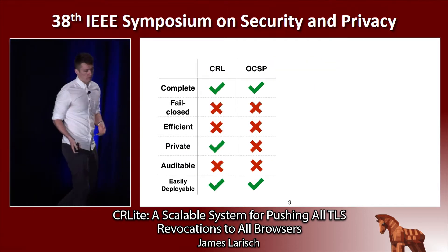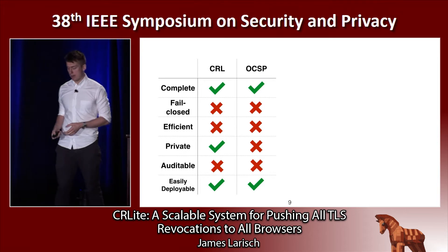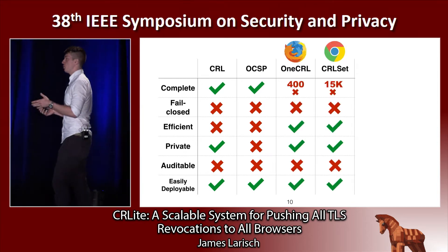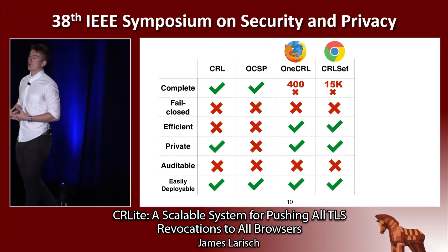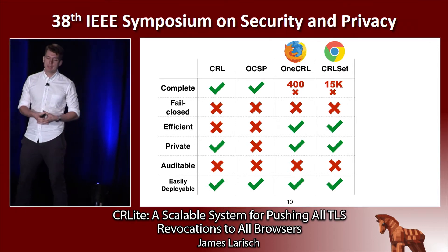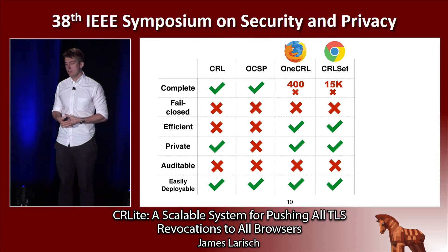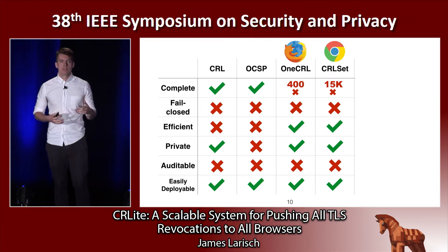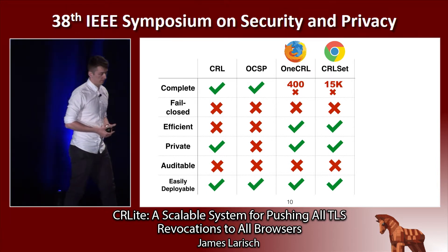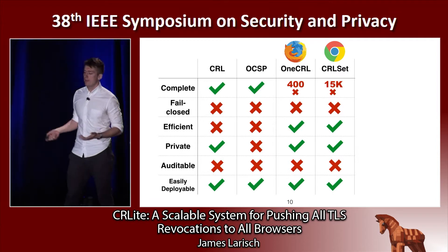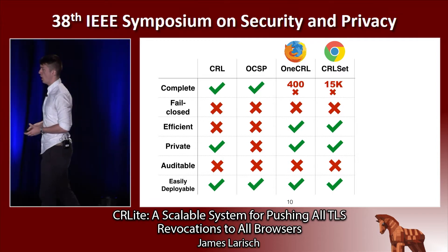Existing revocation mechanisms are inferior and unpopular, so browsers have come up with their own revocation mechanisms. Chrome maintains CRL set, which contains 15,000 high priority revocations. Mozilla does the same thing with one CRL containing 400 revocations. These systems are not designed to be complete, and they are nowhere near so. They are also not auditable.